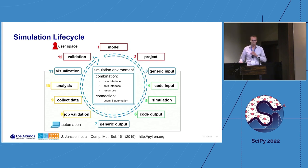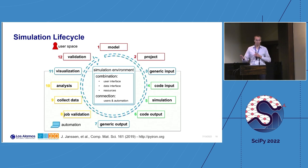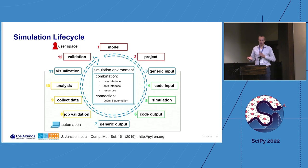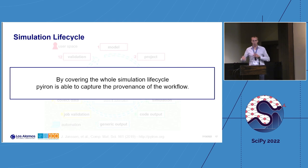By having generic input and generic output, we can iterate over different simulation codes and apply the same analysis to different codes, simplifying the development of analysis models. Job validation — for a DFT code, for example — involves checking electronic convergence. You can collect data from multiple calculations, analyze them with a simple fit, and provide visualized results so the user can say whether their hypothesis is validated or whether the model needs adjustment. The idea is really covering the whole lifecycle, preserving the provenance of every step and thought process.